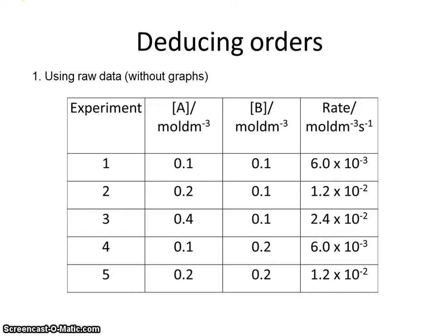Now we come to a critical part: how we use experimental data to deduce orders and hence rate equations. There are three methods. Two involve graphs, which we'll come to later. The first uses raw data. Have a look at the data from this experiment, which has produced some nice results. Though not entirely realistic, examiners tend to produce tables of data in exams with numbers that are easy to interpret. Pause the video to make sure you understand what the data actually means.